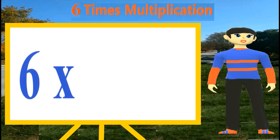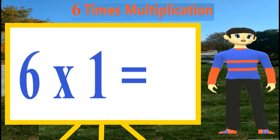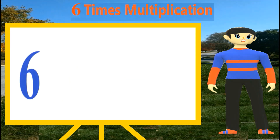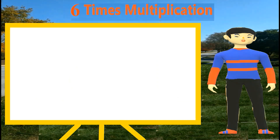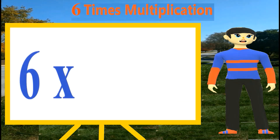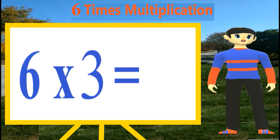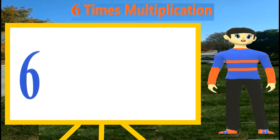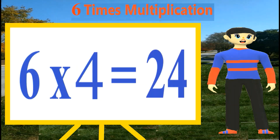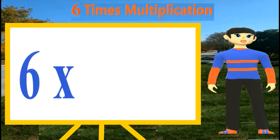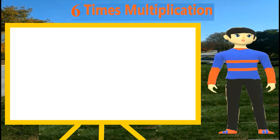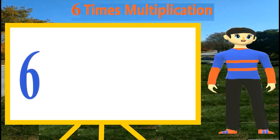6 1's are 6. 6 2's are 12. 6 3's are 18. 6 4's are 24. 6 5's are 30.